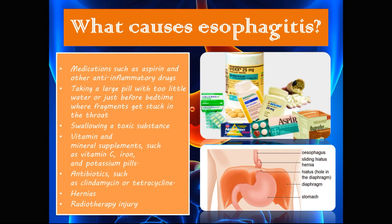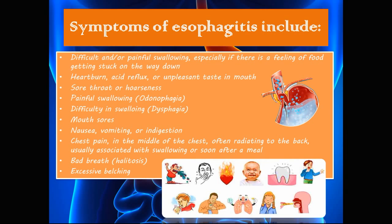Other causes include vitamin and mineral supplements such as vitamin C, iron, and potassium pills, as well as antibiotics such as clindamycin and tetracycline. Hernias — most frequently hiatal hernias — cause a lot of heartburn and acid reflux, which draws a correlation to esophagitis. Radiotherapy injury is also a cause, common in patients undergoing radiotherapy to treat intrathoracic tumors or malignancies.